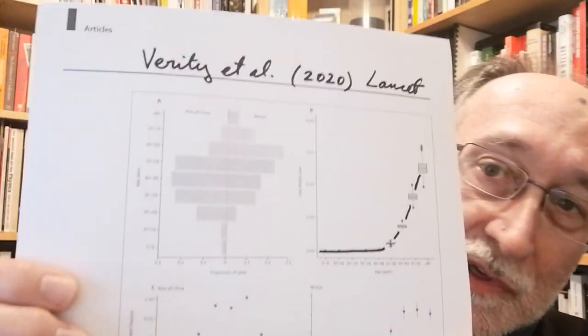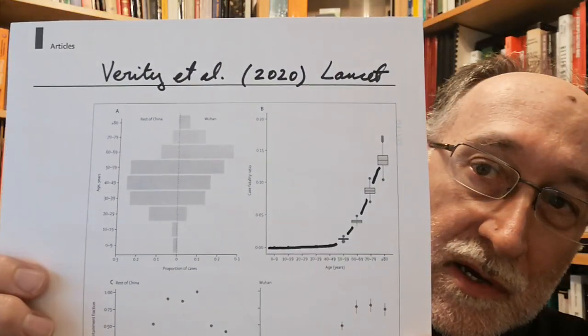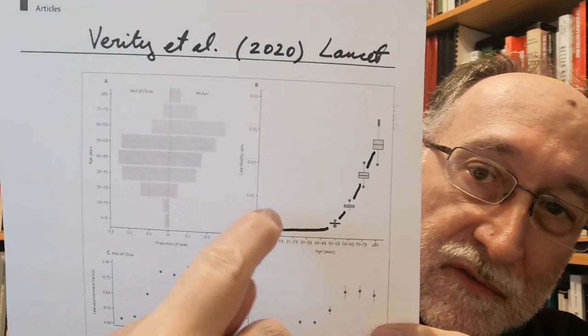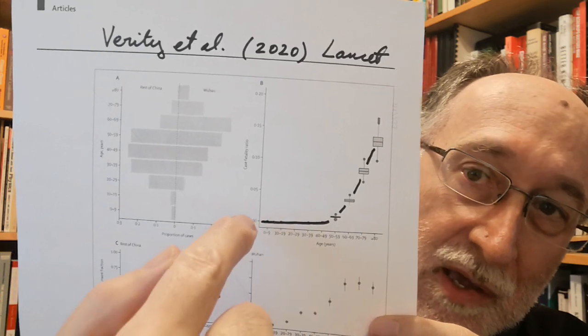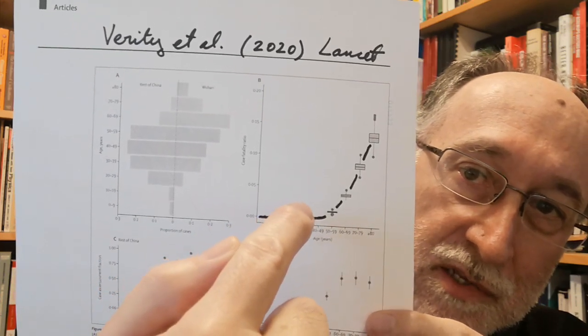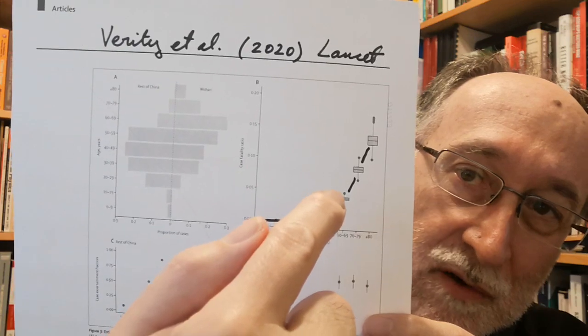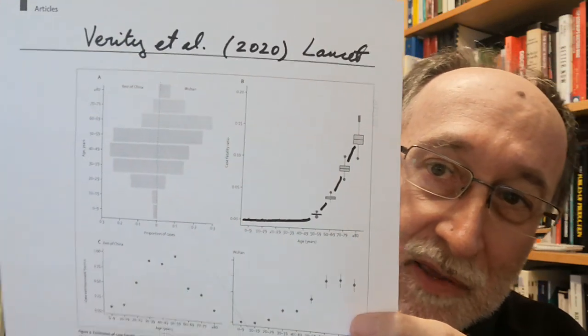The first point I want to make is that very recently this year in The Lancet, Verity et al. published an important summary of what the fatality rates are for this disease. This is a picture of the cover of that article, and you can see this graph is very important because the case fatality rate is near zero until you get up into the 60 and over ages, and then it goes up sharply.